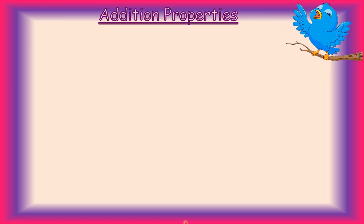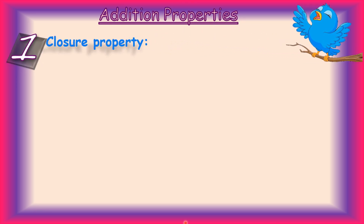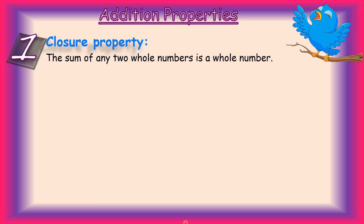Let's revise addition properties. The first property is the closure property. Under this property, when we add any two or more whole numbers, the sum we get will always be a whole number. For example, 7 plus 3 equals 10, which verifies that the sum of any two whole numbers is a whole number.